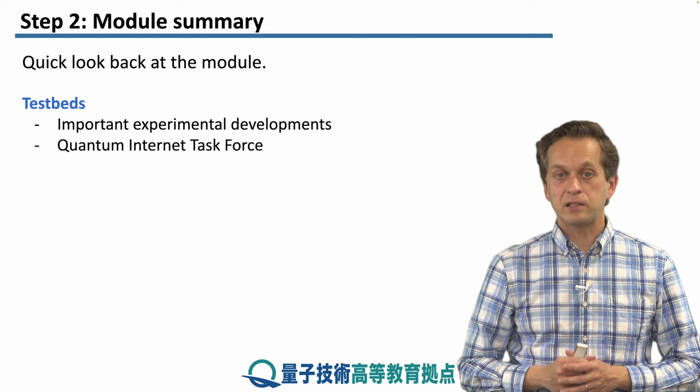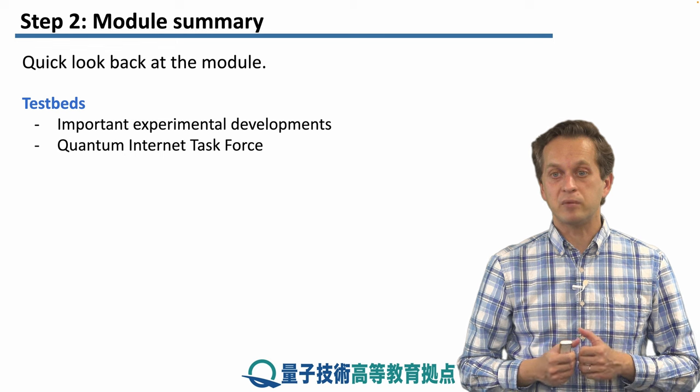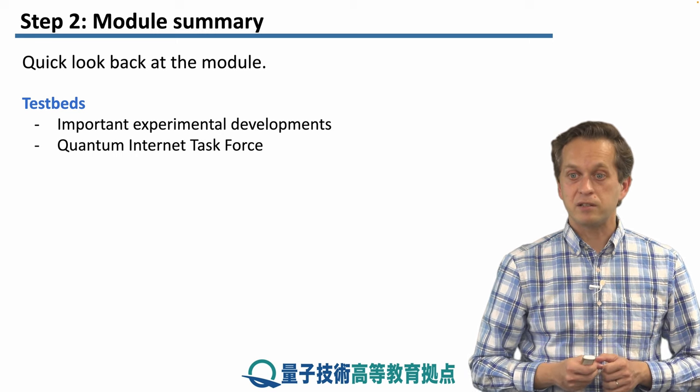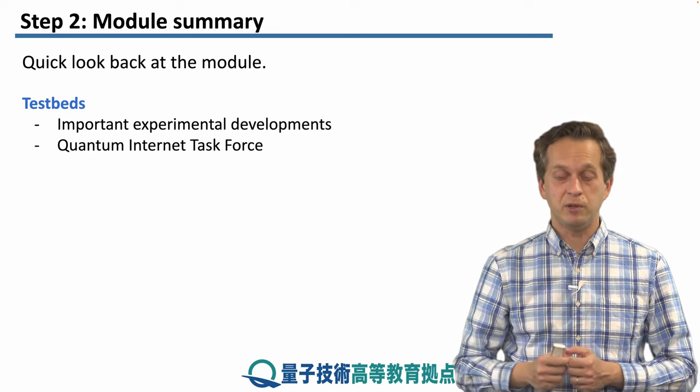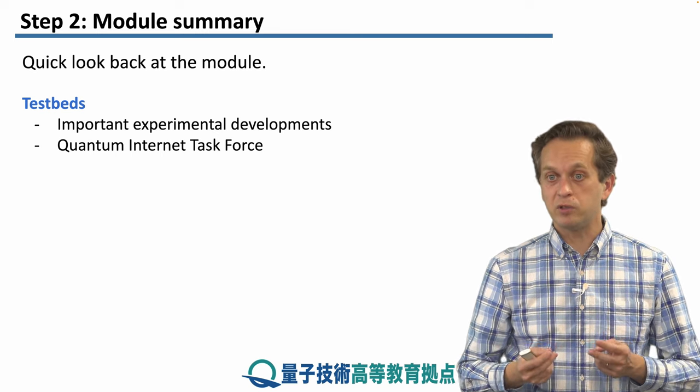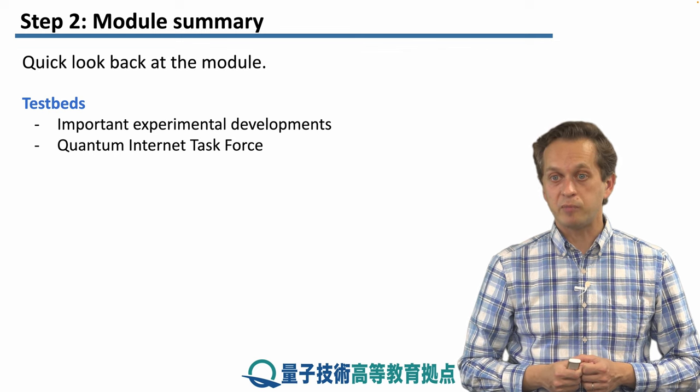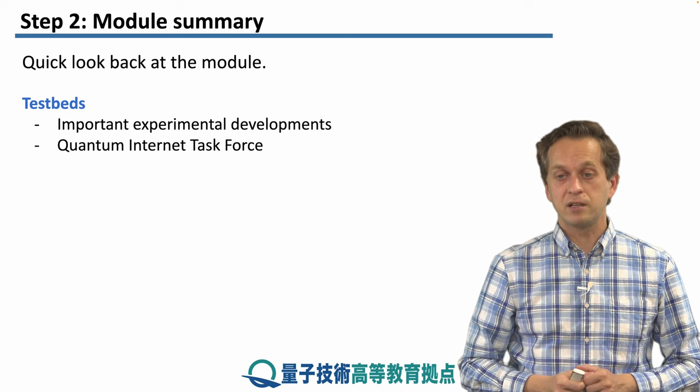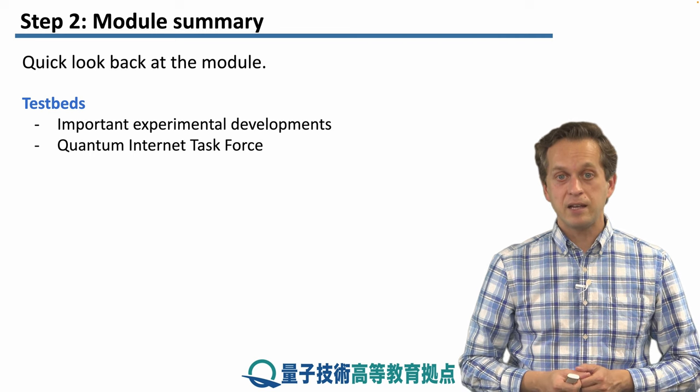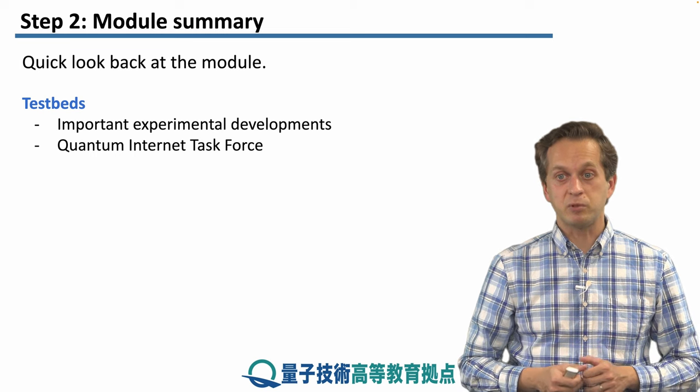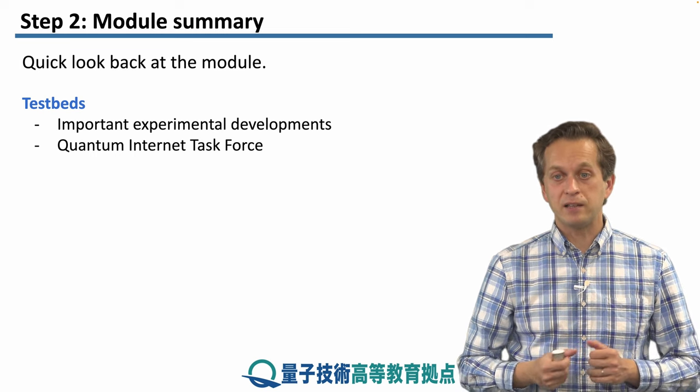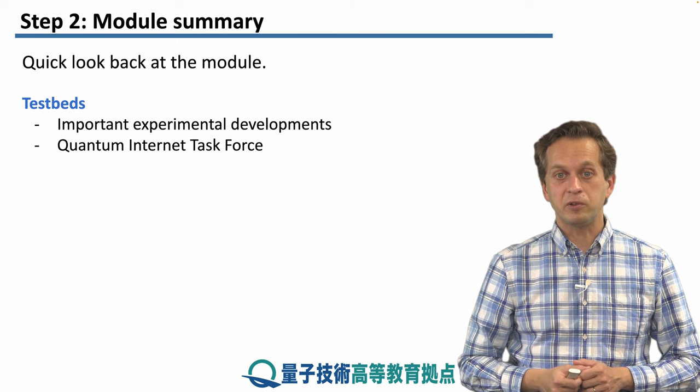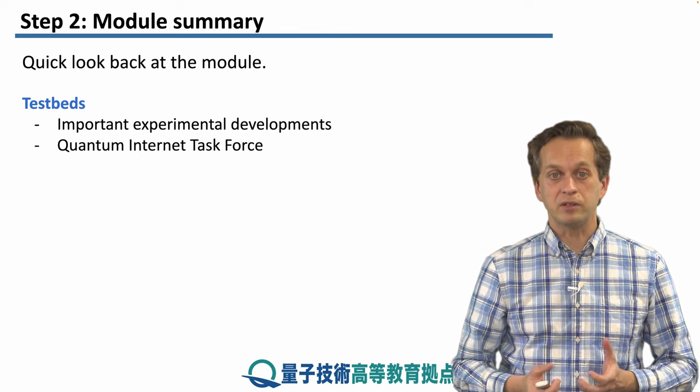And finally, in the last two lessons, we looked at various testbeds and various experimental implementations of the basic primitives of quantum networking. We talked about how NV centers can be used to set up a three node network and perform teleportation between non-neighboring nodes. We looked at a similar experiment with two nodes, but this time using quantum ion trap memory qubits. We also looked at using satellites to establish long distance entanglement between two ground stations, as well as performing teleportation across a very large distance between islands in the Canary Islands. And the final lesson was dedicated to quantum networking efforts here in Japan and particularly about the quantum internet task force, the QITF, and their efforts to build a testbed here in Japan.